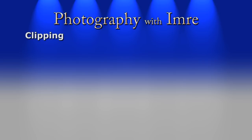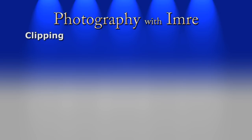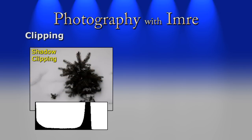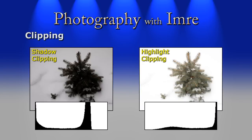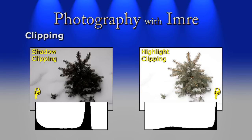What does a clipped histogram look like? On the left is a shadow clipped one and on the right is a highlight clipped one. Notice that the number of pixels at the extremes increase. The higher the values in those areas, the greater is the extent of clipping throughout an image.